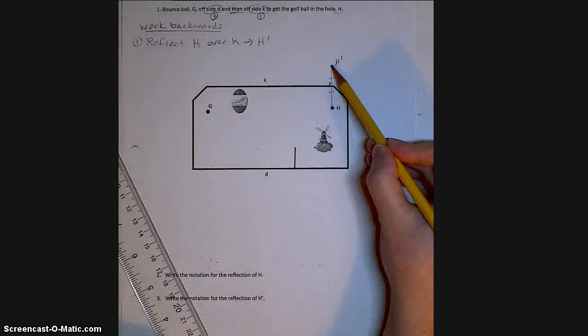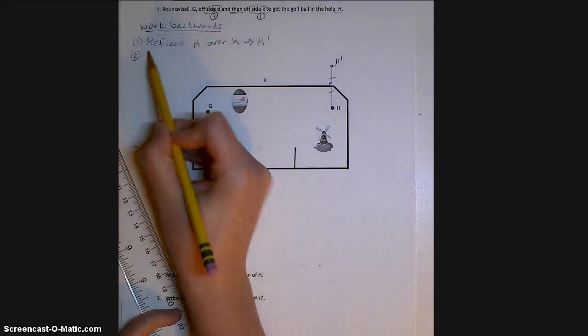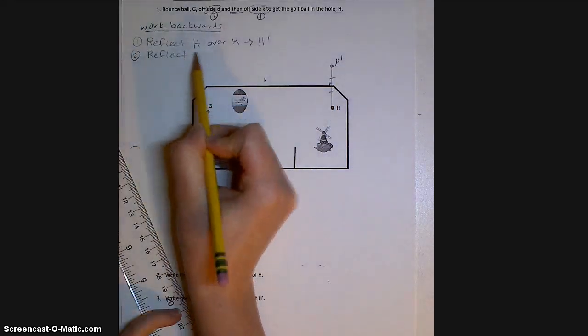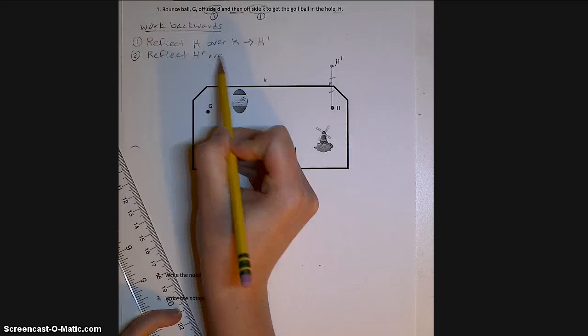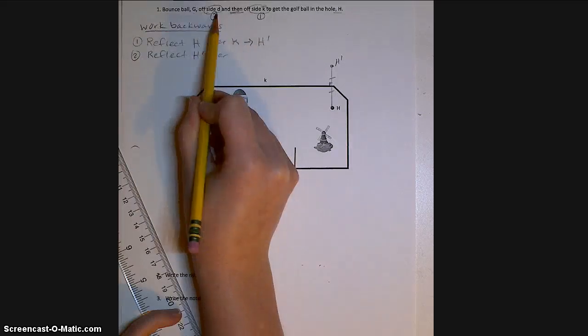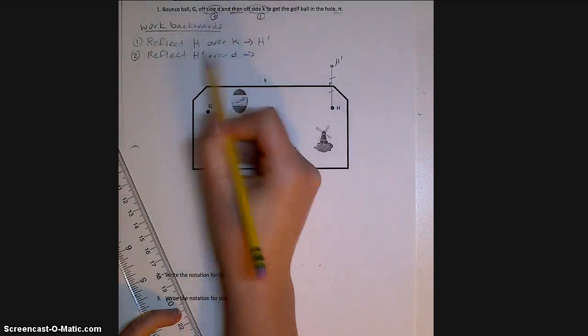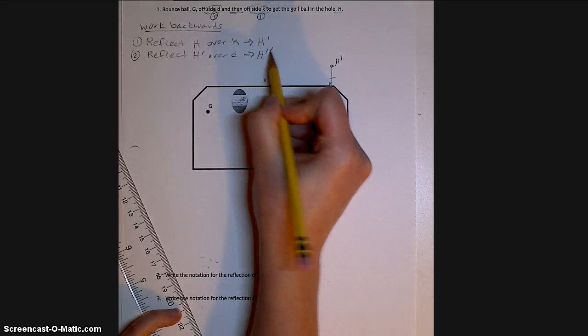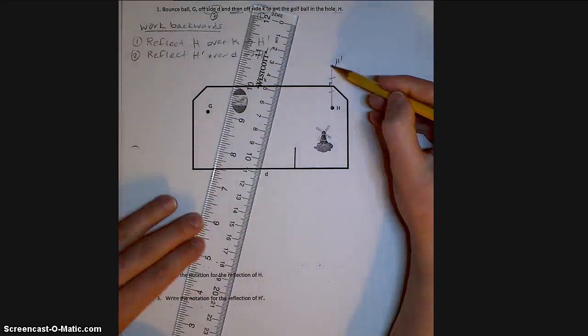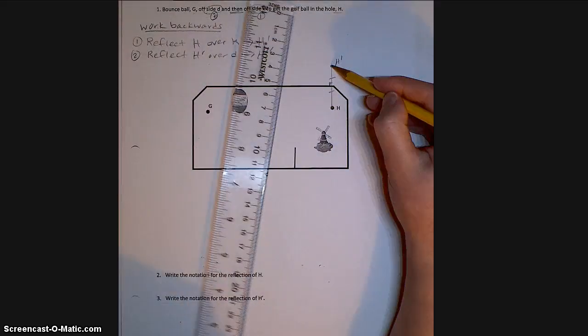Then I'm going to use this point H prime to do my next reflection over side D. And when I reflect a prime symbol, I'm going to get a double prime.